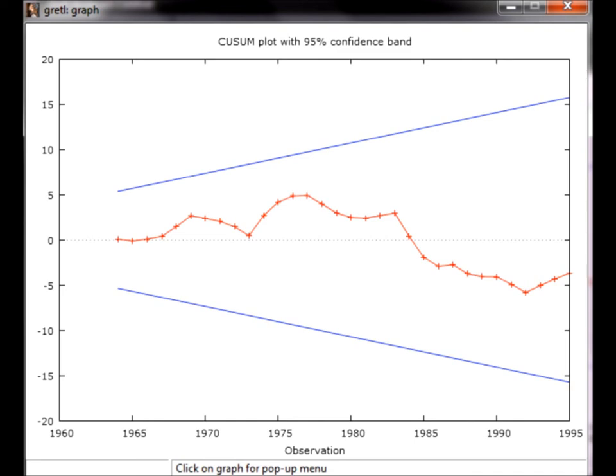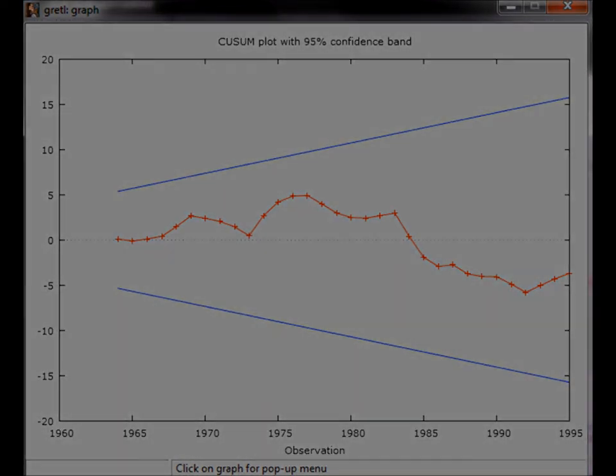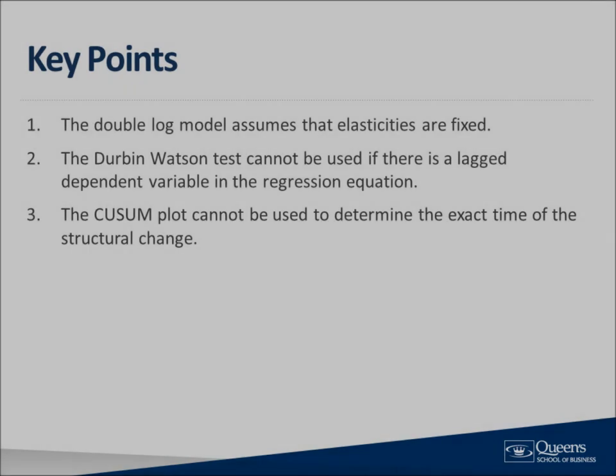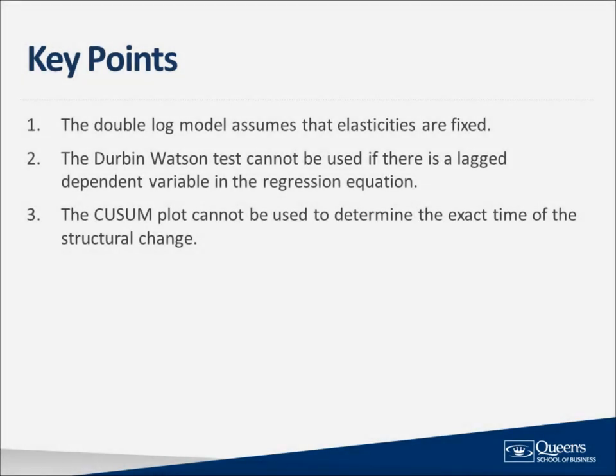This concludes the last specification test covered in this video. We have now finished learning how to use Gretl to perform three specification tests. Before wrapping up the video, let me summarize the three key points to remember. Number 1: the double log model assumes that elasticities are fixed. Number 2: the Durbin-Watson test cannot be used if there is a lagged dependent variable in the regression equation. Number 3: the QSUM plot cannot be used to determine the exact time of the structural change.